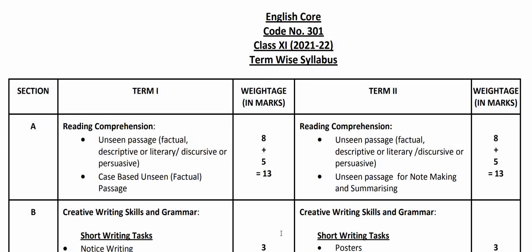Now let us look at the Term 2 portion and compare the similarities and differences. For Term 2 Reading Comprehension, the unseen passages include factual, descriptive, and discursive or persuasive passages. Additionally, unseen passage for note-making and summarizing is included in Term 2 — unlike Term 1, which had case-based studies with tabulated information. The total marks are eight plus five, that is 13 marks altogether for Term 2 reading.